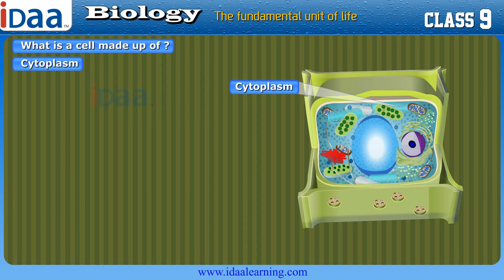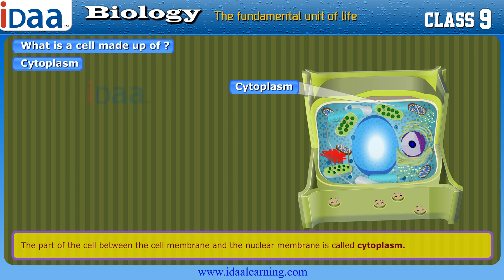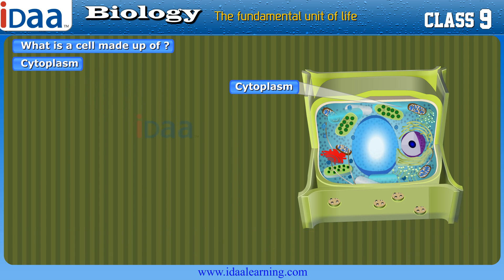Cytoplasm is the thick, jelly-like substance that makes up most of the cell. The part of the cell between the cell membrane and the nuclear membrane is called cytoplasm. The cytoplasm consists of a transparent semi-fluid substance called matrix.